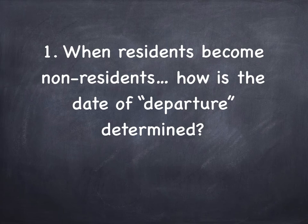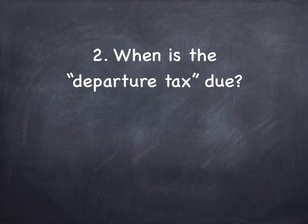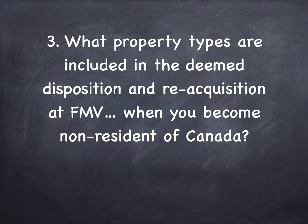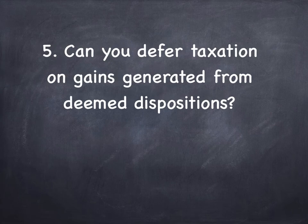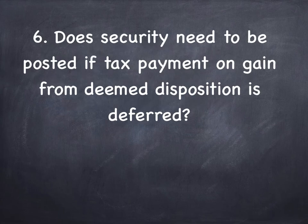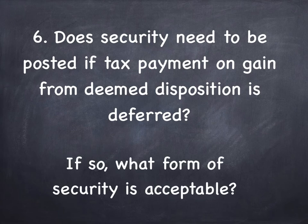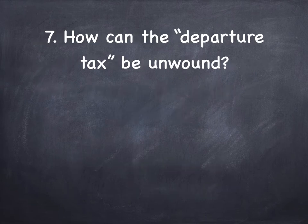Number one: when residents become non-residents, how is the date of departure actually determined? Number two: when is the departure tax due? Number three: what property types are included in this deemed disposition and reacquisition at fair market value? Number four: what property types are excluded? Number five: can you defer taxation on gains that are generated from the deemed dispositions? Number six: does security need to be pledged if a tax payment on the gain can be deferred, and if so, what form of security is acceptable?